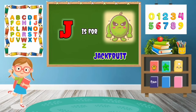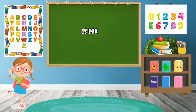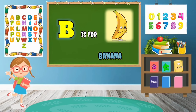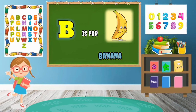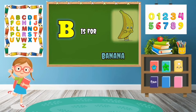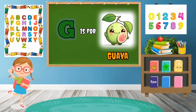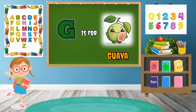J is for Jackfruit, J-A-C-K-F-R-U-I-T, Jackfruit. B is for Banana — you all know, yes! B-A-N-A-N-A, Banana. G is for Guava, G-U-A-V-A, Guava.